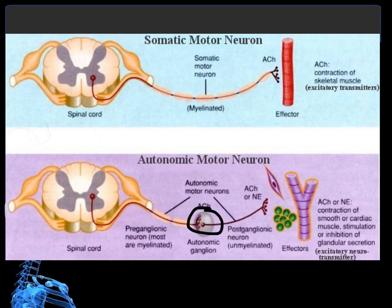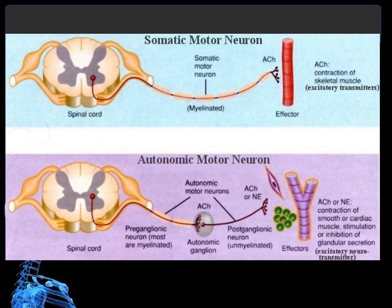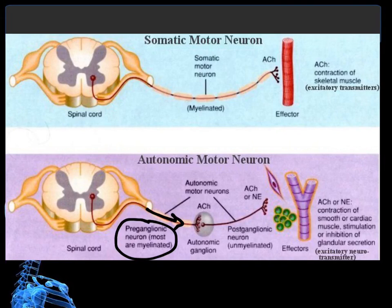A ganglion is a collection of cell bodies. If you have a bunch of neurons collected in one area, the cell body region is much thicker than the rest of the nerve, so it bulges — and that bulge is called the ganglia. Ganglion is singular and ganglia is plural. Because of the synapse, there are two nerves involved. The one that comes before the ganglion is called the preganglionic neuron, and the neuron that comes after the ganglion is called the postganglionic neuron.